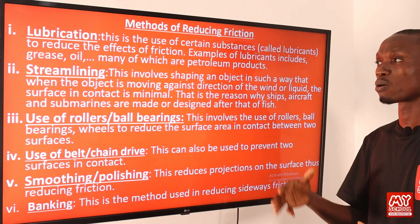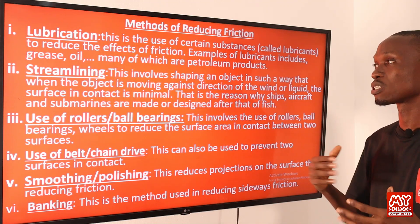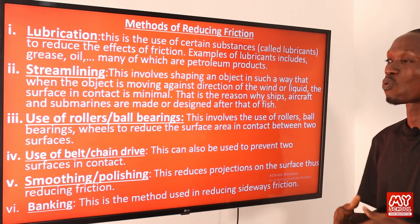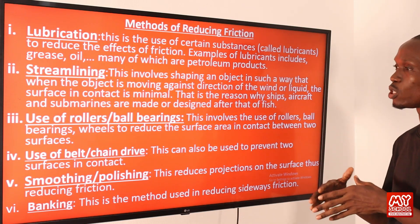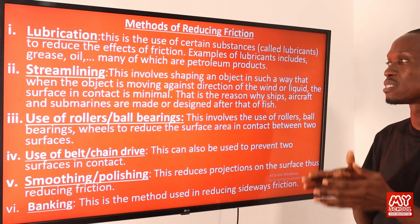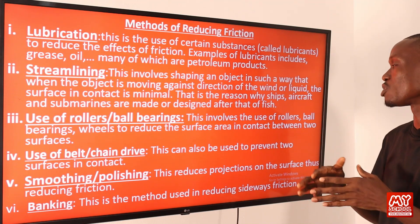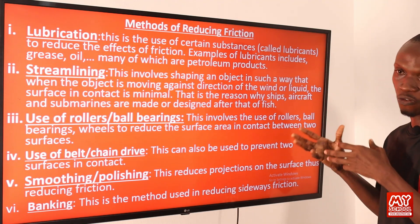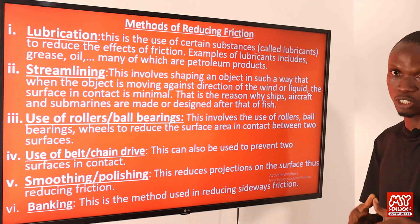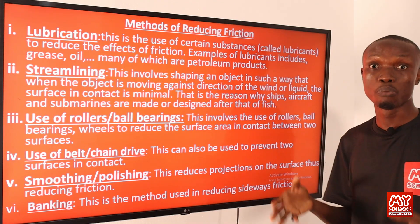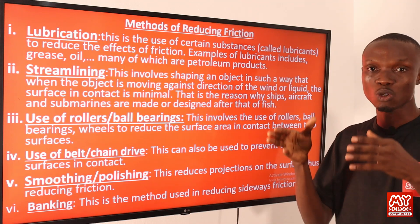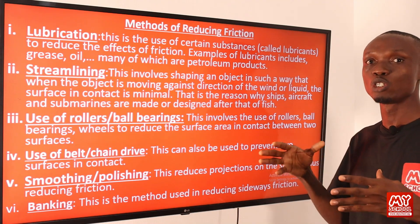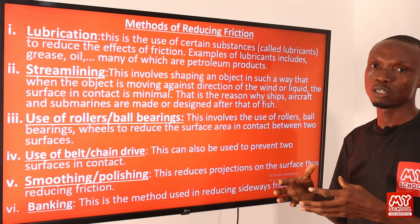The second method is streamlining — shaping an object so that when it moves against wind or liquid, the surface in contact is minimal. This is why ships, aircraft, and submarines are designed after the shape of a fish. A good example is the bullet train, which is shaped like a fish. Cars are also streamlined to reduce their contact surface area with air.